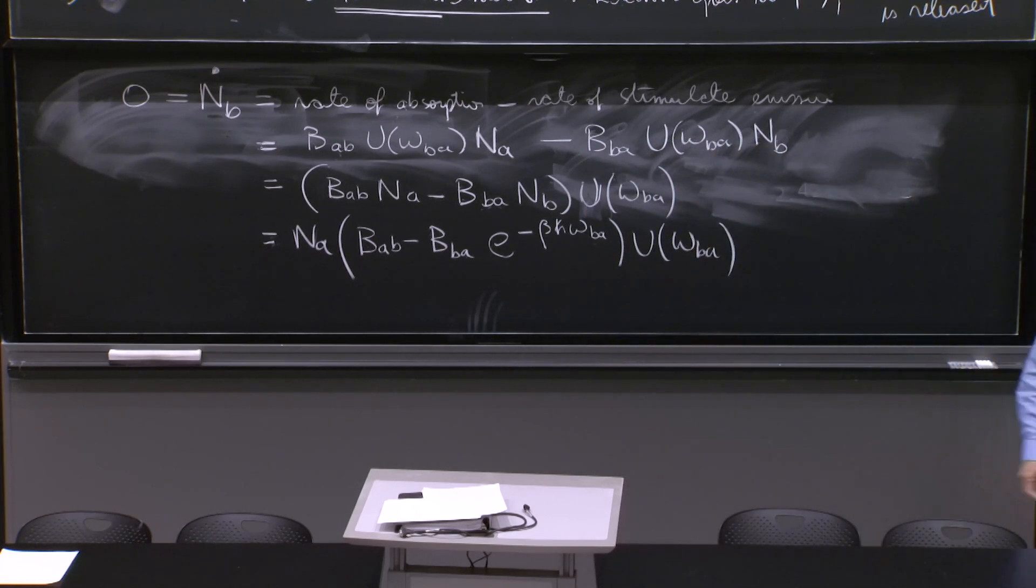And this becomes BAB minus BBA e to the minus beta h bar ωBA U of ωBA. I use the ratio of NA over NB being thermodynamical. So NB over NA was used from equation 2 to get this, and this should be equal to 0.